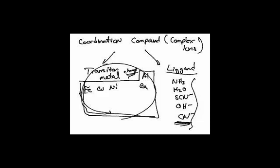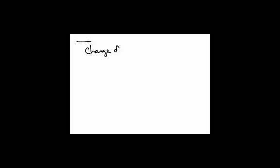Here's the general rule: you take the charge of the metal, double that number, and that tells you the number of ligands to attach. Then you must refigure the overall charge of the complex ion.